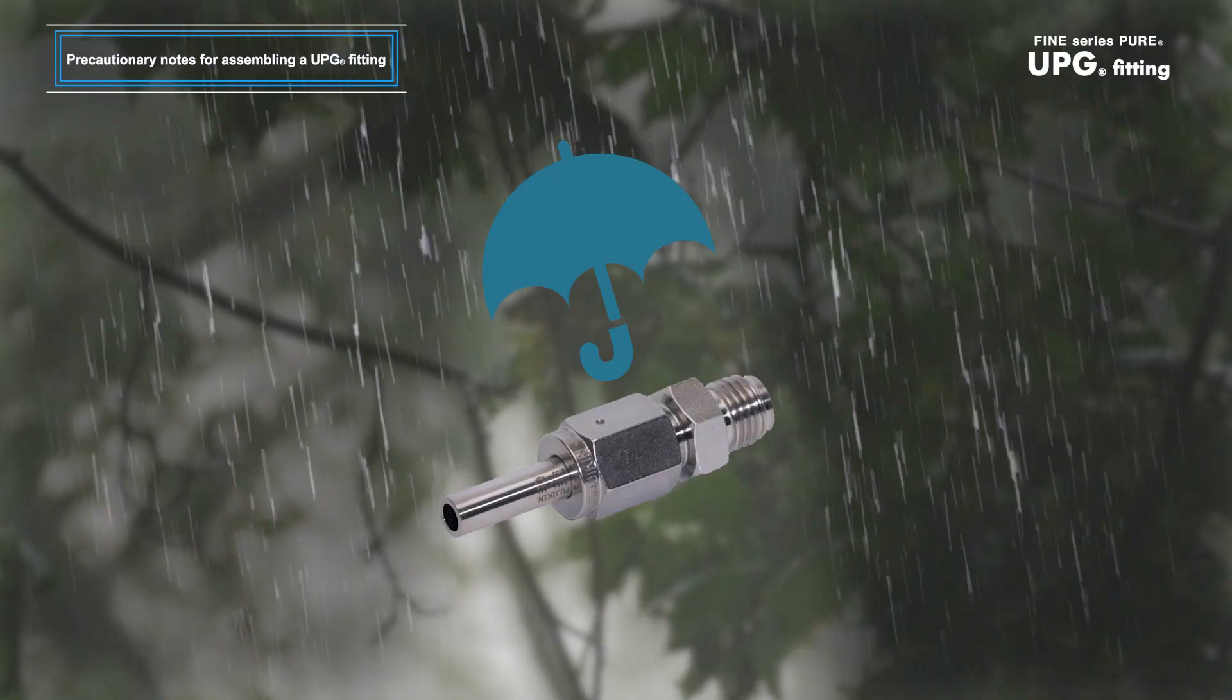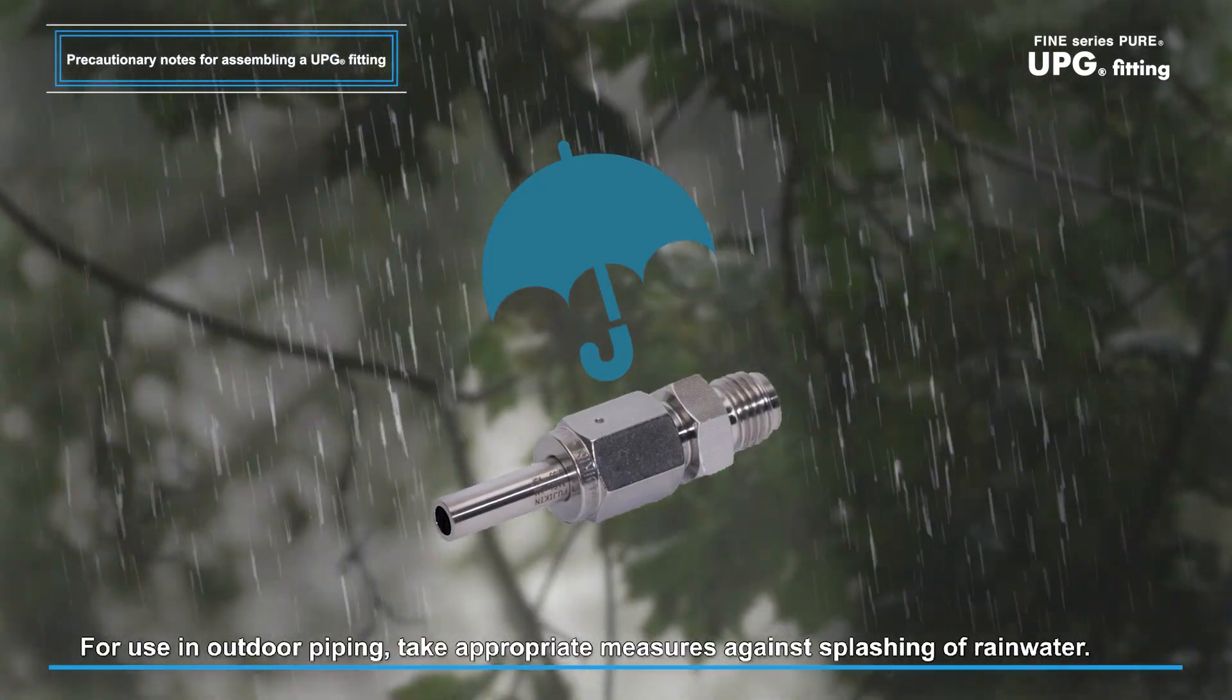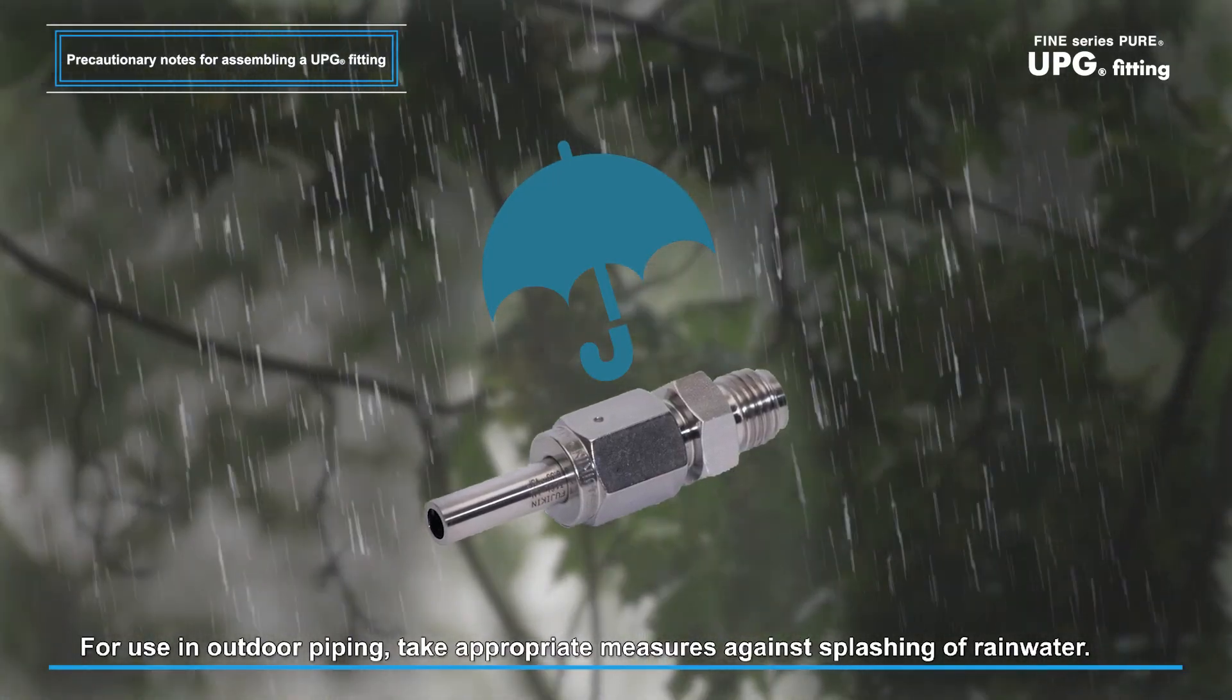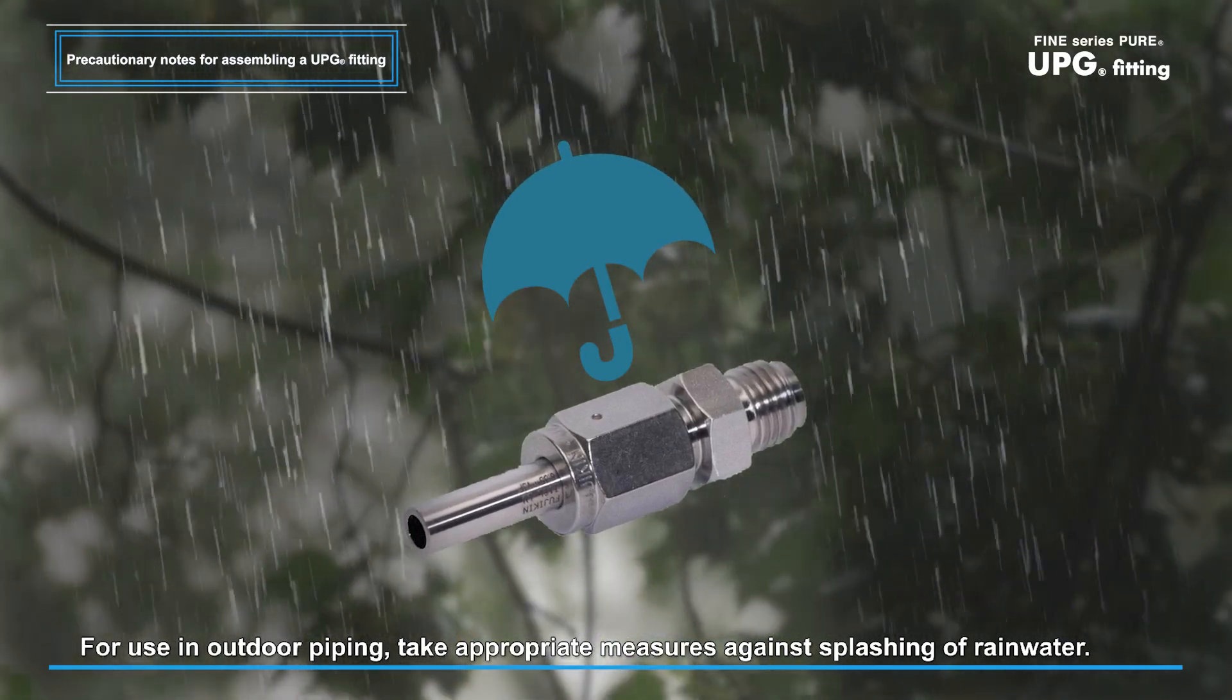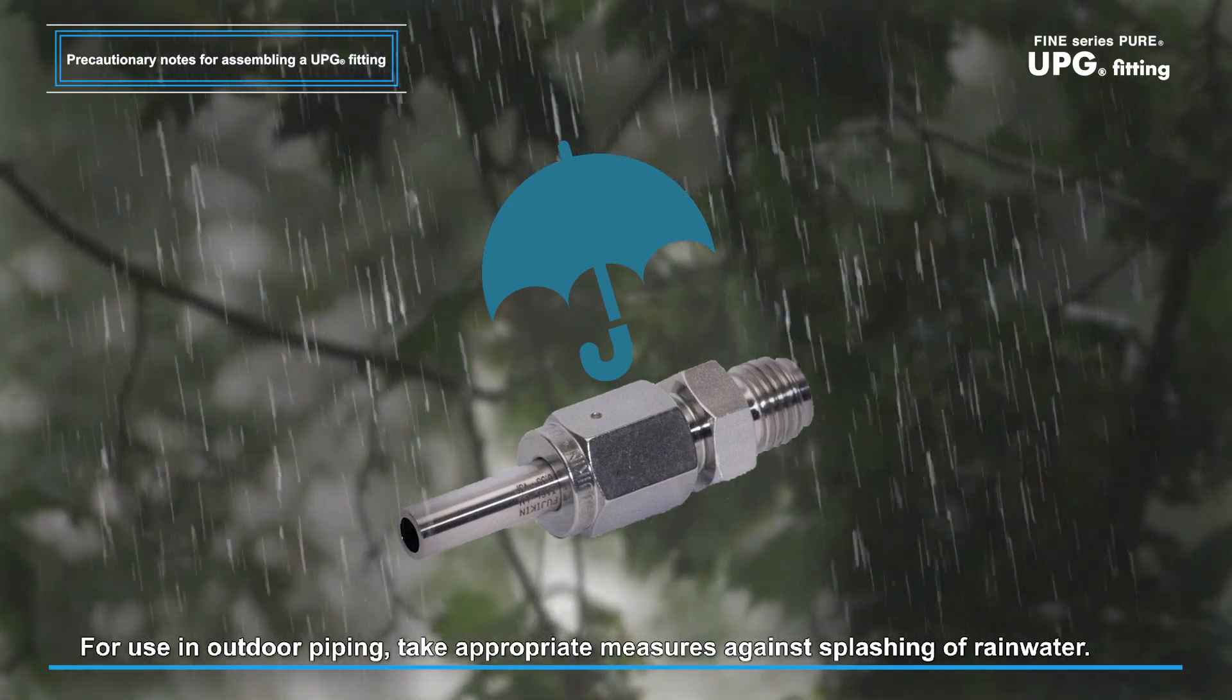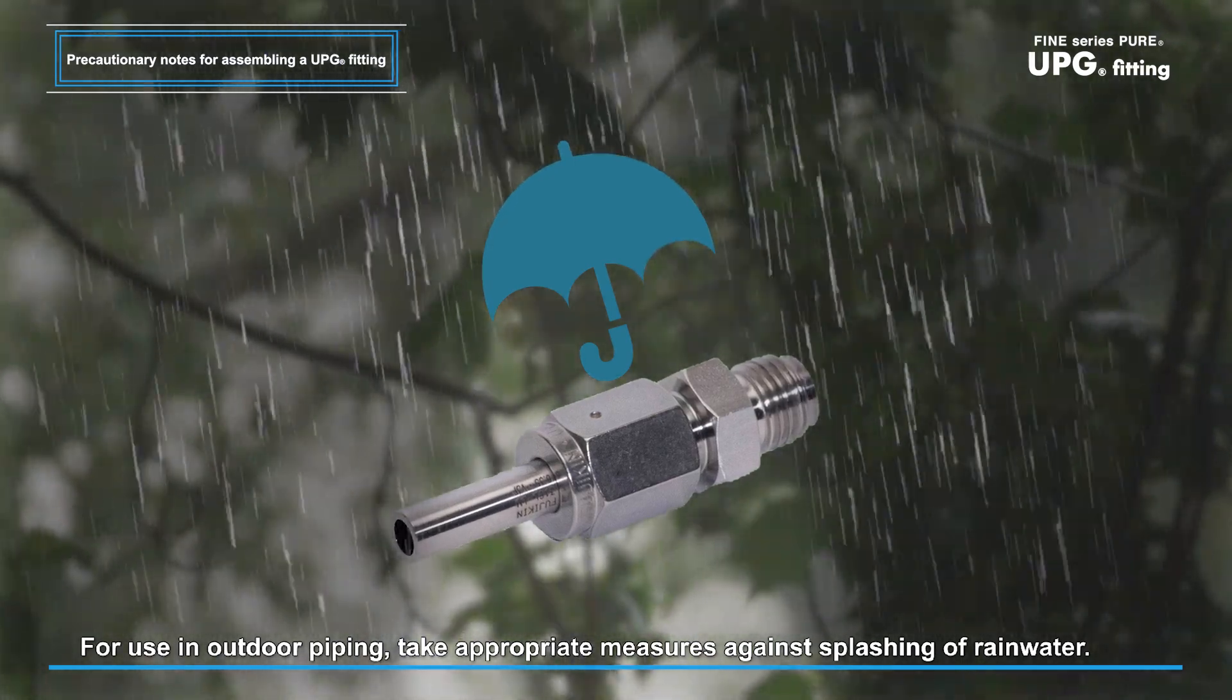When using a UPG fitting, avoid places likely to be exposed to rainwater splashed from outdoor piping, for example. Therefore, take appropriate measures to prevent UPG fittings from being splashed with rainwater.